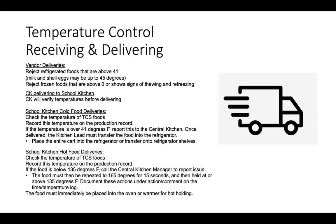Once the food is delivered, the kitchen lead must transfer the food into the refrigerator — either the entire cart or individual items onto the refrigerator shelves. When receiving hot food deliveries, check the temperature of the foods. If the food is below 135 degrees, call the central kitchen manager to report the issue. The food must then be reheated to 165 degrees for at least 15 seconds and then held at or above 135 degrees. Document these actions under the action and comment section on the time and temperature log. Always remember to place food immediately into the oven or warmer, or the refrigerator for cold holding.